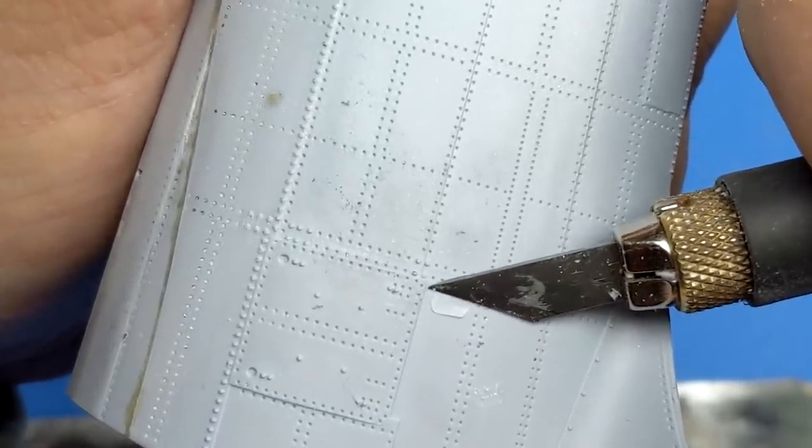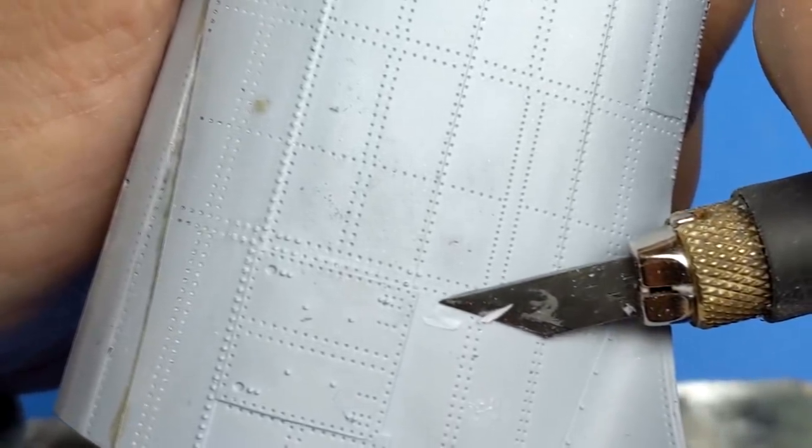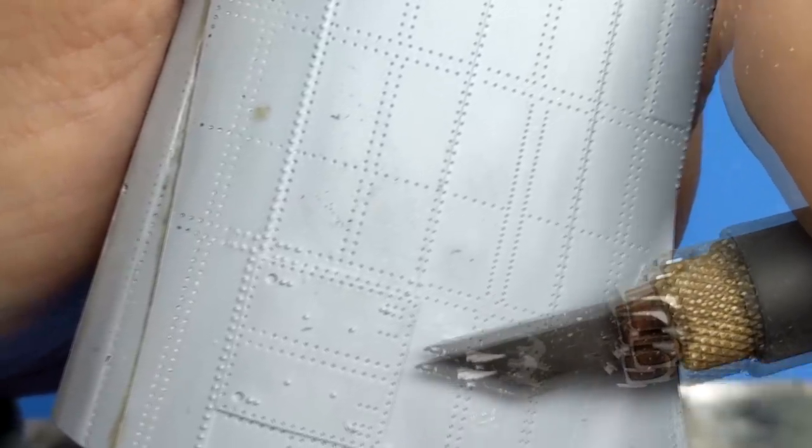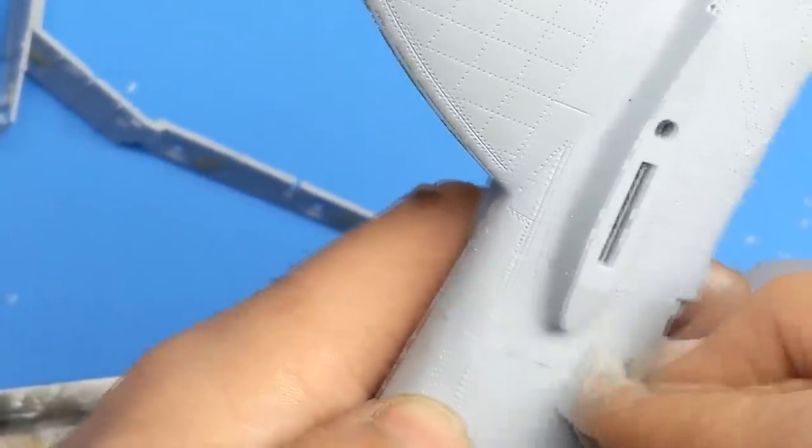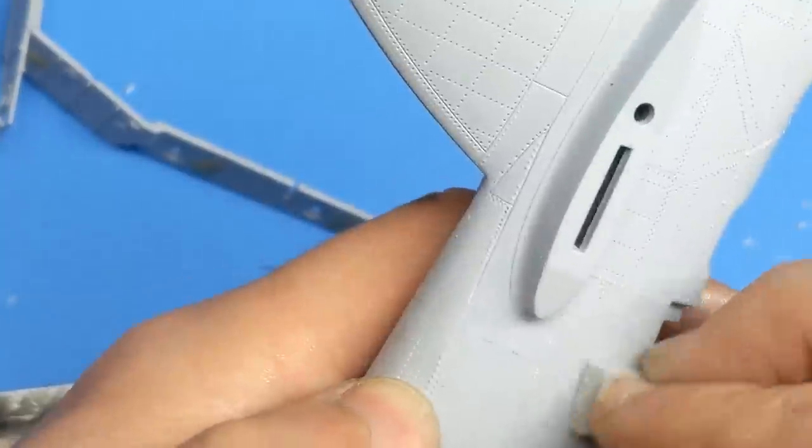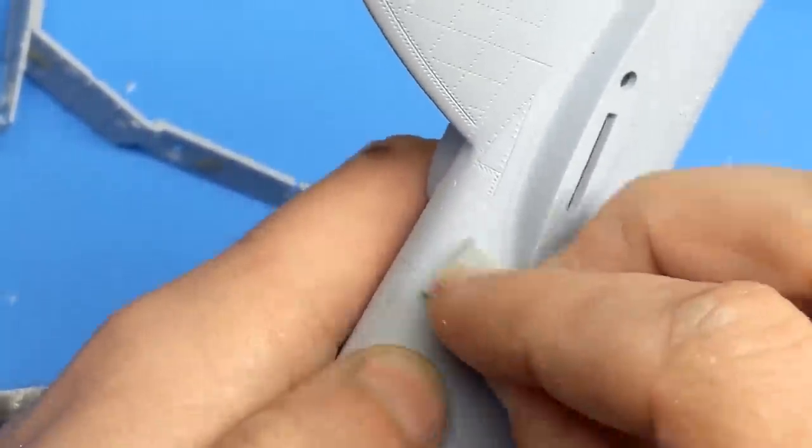Another route that Airfix could have gone with the fish plates would have been to actually provide them as a separate piece. That way you could put your seam together, clean it up and then put the fish plate on or have photo etch parts. But Airfix doesn't really do photo etch so we'll move along.